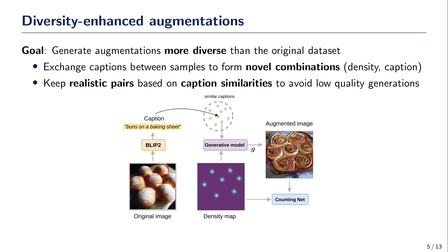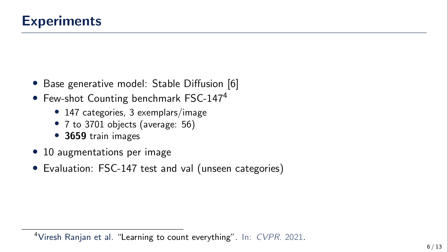This approach allows generating data unseen in the original dataset. We conduct experiments with Stable Diffusion as our base generative model. This model is fine-tuned on the training images of the few-shot counting benchmark dataset FSC147. We then generate a 10 times augmented version of this dataset to train the counting networks. Finally, we evaluate on the test and validation sets of FSC147 that contain unseen categories.